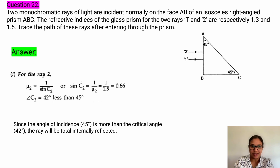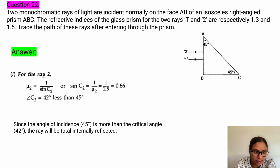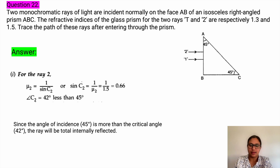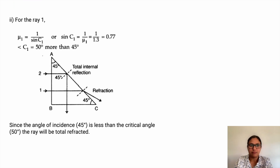Next question. Two monochromatic rays of light are incident normally on face AB of an isosceles right-angle prism ABC. The refractive indices for rays 1 and 2 are 1.3 and 1.5 respectively. For ray 2: critical angle C2 gives sin C2 = 0.66, so critical angle is 42 degrees, which is less than 45 degrees — ray 2 undergoes total internal reflection. For ray 1: critical angle is 50 degrees, which is more than 45 degrees — so ray 1 is refracted. In the diagram, ray 2 undergoes total internal reflection and ray 1 is refracted.